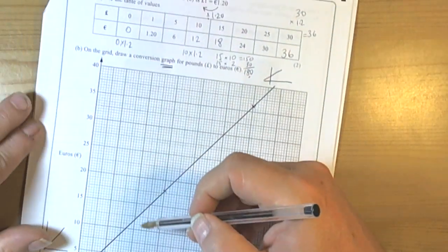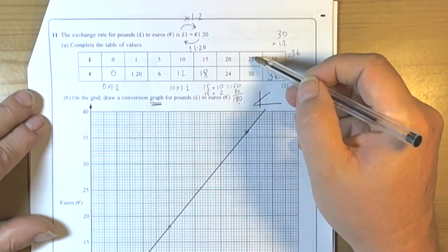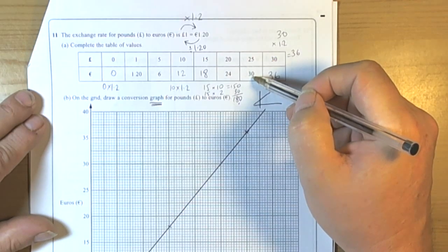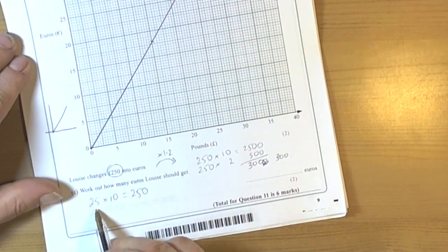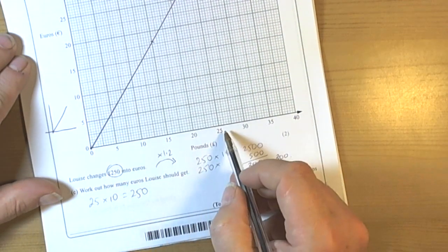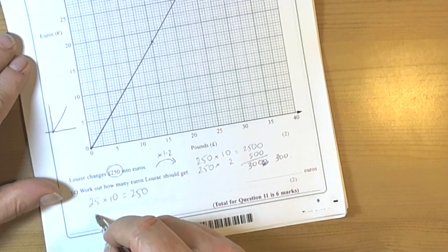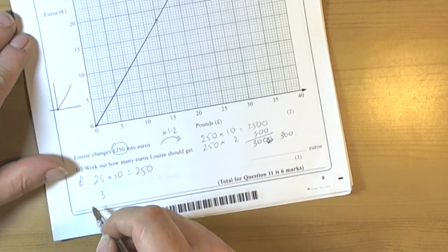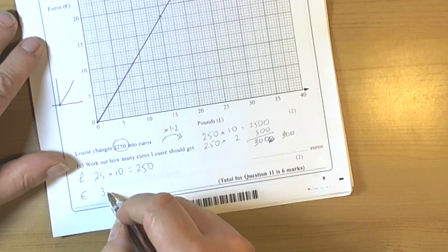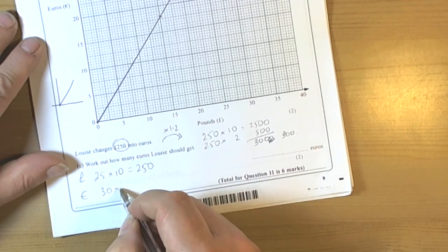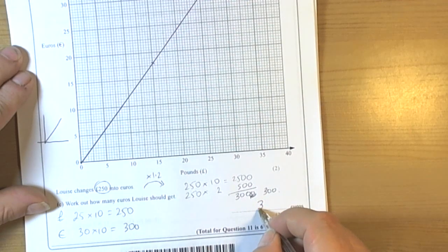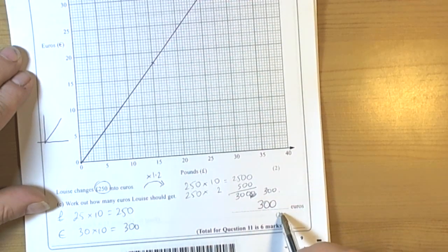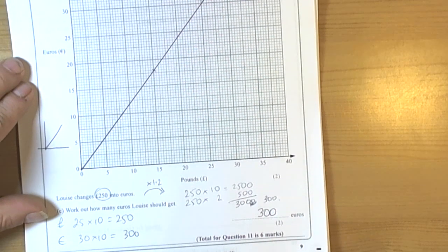So 30, or I could have used the table, because they did tell us that 25 pounds was worth 30 euros in the table as well. So there are several ways to do this question. So we knew that 25 was 30, so this was pounds, so in euros it's 30 times 10, which is the same as we had before, 300. So it just kind of double checks how we could get the right answer of 300 euros.